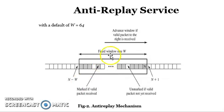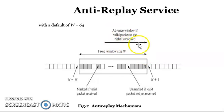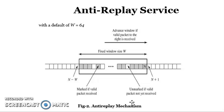A fixed window size is used to handle packet transfer. The window is advanced when a valid packet is received. Packets are marked if received and unmarked if not received — this mechanism shows whether a packet has been received or not. The window size W is taken as 64, and within it packets are marked as received or not received. This is the anti-replay mechanism.